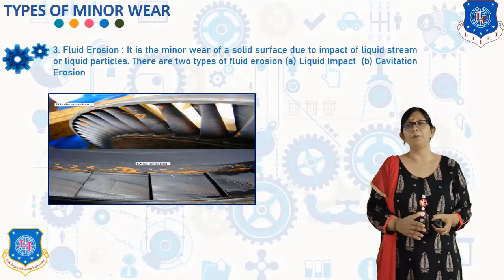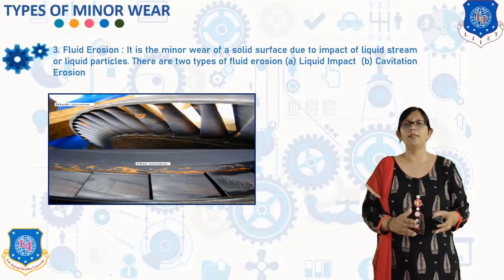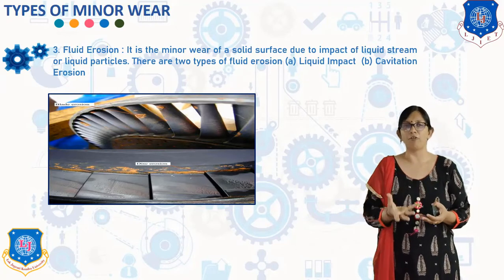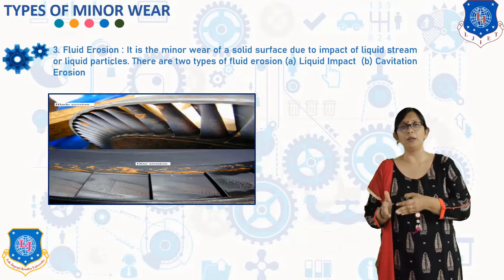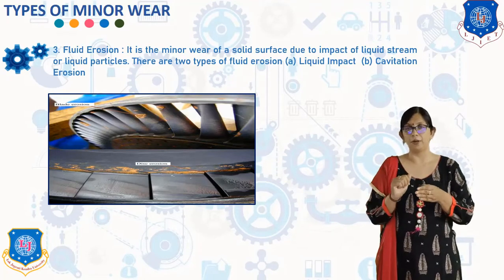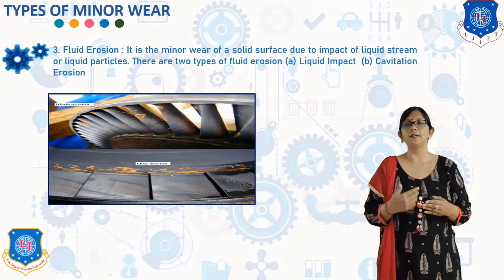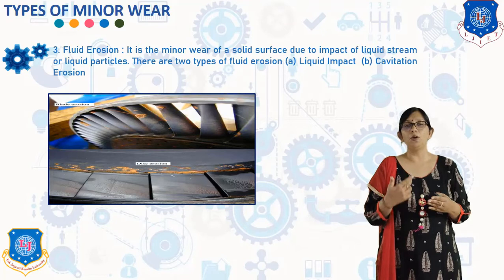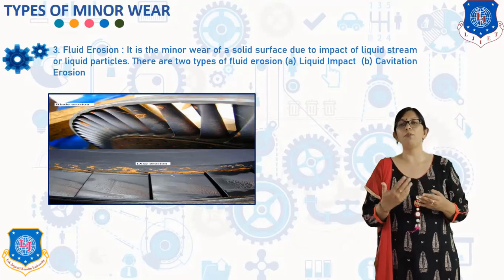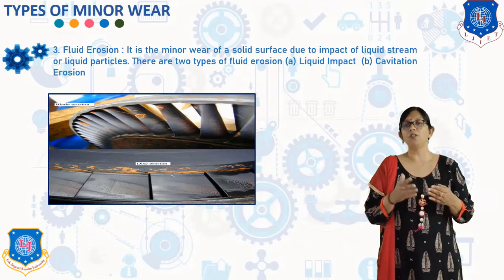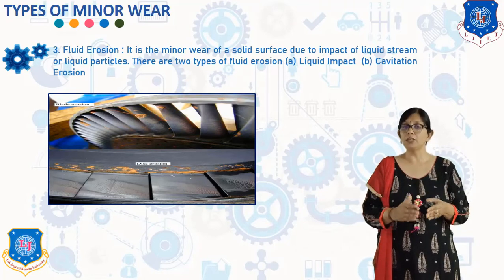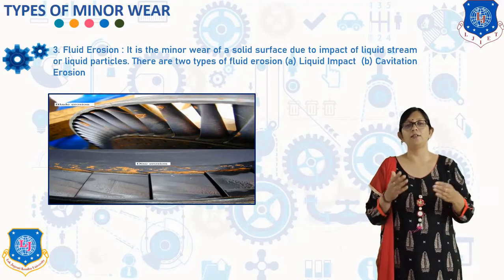In cavitation erosion, when the pressure in any part of a liquid flow passage reaches the vapour pressure of the liquid, the liquid starts vaporizing and a large number of small vapour bubbles are formed. At low pressure, air dissolved in the liquid is also released, forming air bubbles. These vapour and air bubbles are carried along with the flowing liquid. On reaching a high pressure zone, the bubbles suddenly collapse as the vapour condenses back to liquid. These bubbles may also collapse where they form due to a momentary local increase in pressure. This process of bubble formation and collapsing is called cavitation.